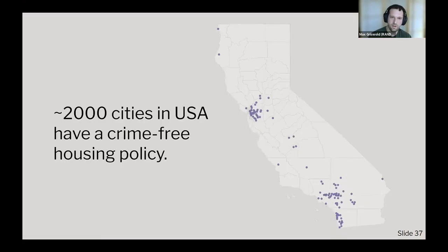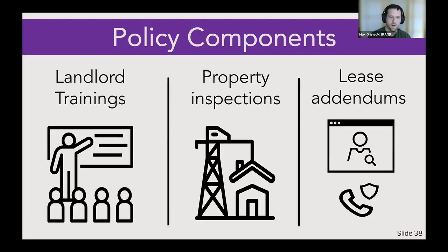The policy has since spread to around 2,000 municipalities in the USA. Our specific study investigates this policy within the state of California. Crime-free housing policies are implemented by police departments and include three primary components. First, police departments train landlords enrolled in the program in ways to screen tenants for criminal activity — the goal being to reduce criminal activity in multifamily housing properties. Second, landlords must make changes to the built environment following crime prevention through environmental design (CPTED) standards, such as trimming hedges, adding lighting to common spaces, and deadbolting building doors.